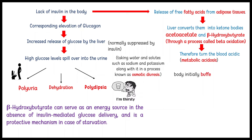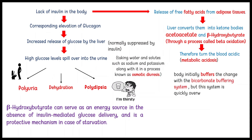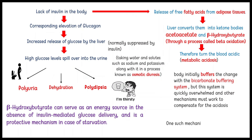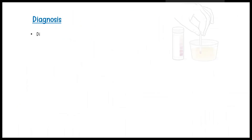The body initially buffers the change with the bicarbonate buffering system, but this system is quickly overwhelmed and other mechanisms must work to compensate for the acidosis. One such mechanism is hyperventilation to lower blood carbon dioxide levels. This hyperventilation, in its extreme form, may be observed as Kussmaul respiration.